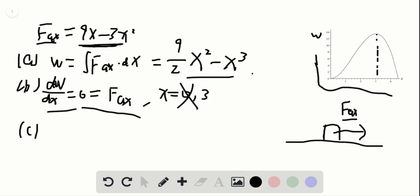And for part C, we want to find the maximum work. So we just need to plug x equal to 3 into the work expression. So we see that this is equal to 13.5 joules.